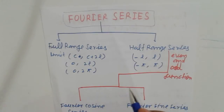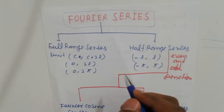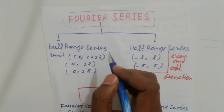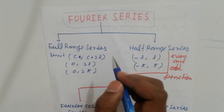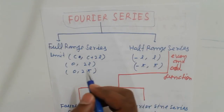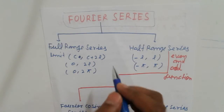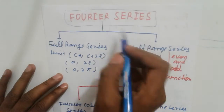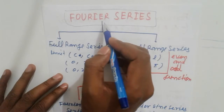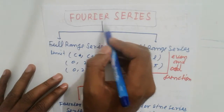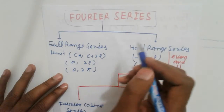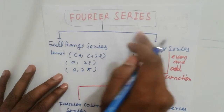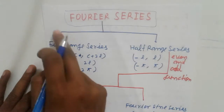Before watching this, please subscribe to my channel, like, share, and tell your friends. Now, how many types does Fourier series divide into? Fourier series is generally divided into two parts: the first is full-range series.